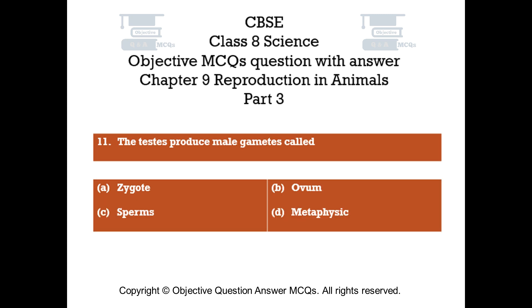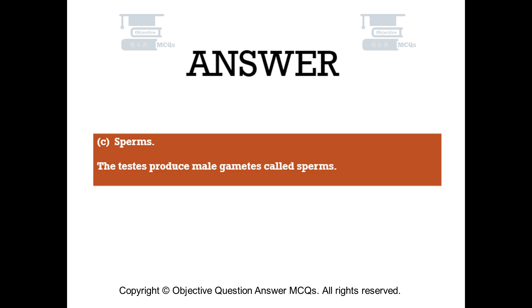Question number 11. The testes produce male gametes called. Option A: Zygote. Option B: Ovum. Option C: Sperms. Option D: Metaphysic. The right answer is option C — Sperms. The testes produce male gametes called sperms.